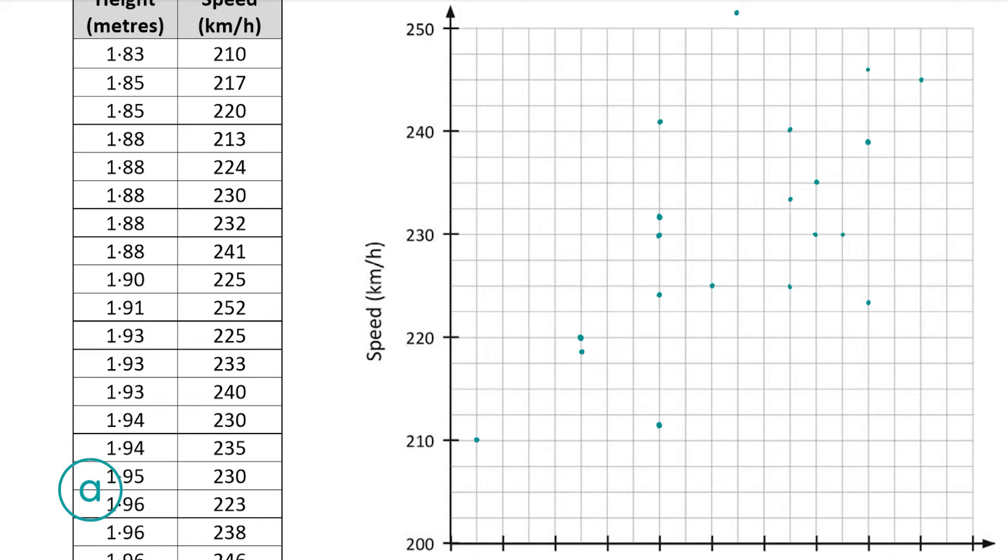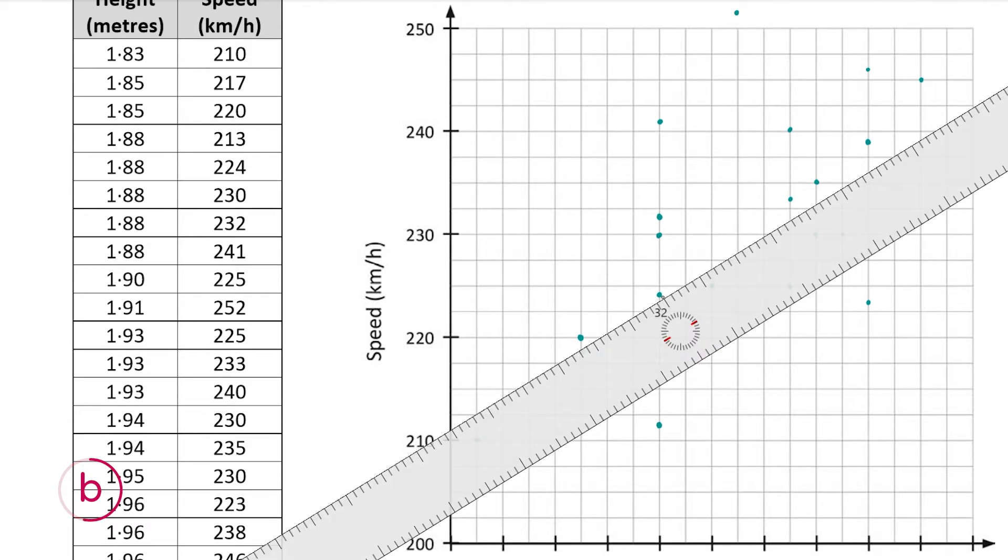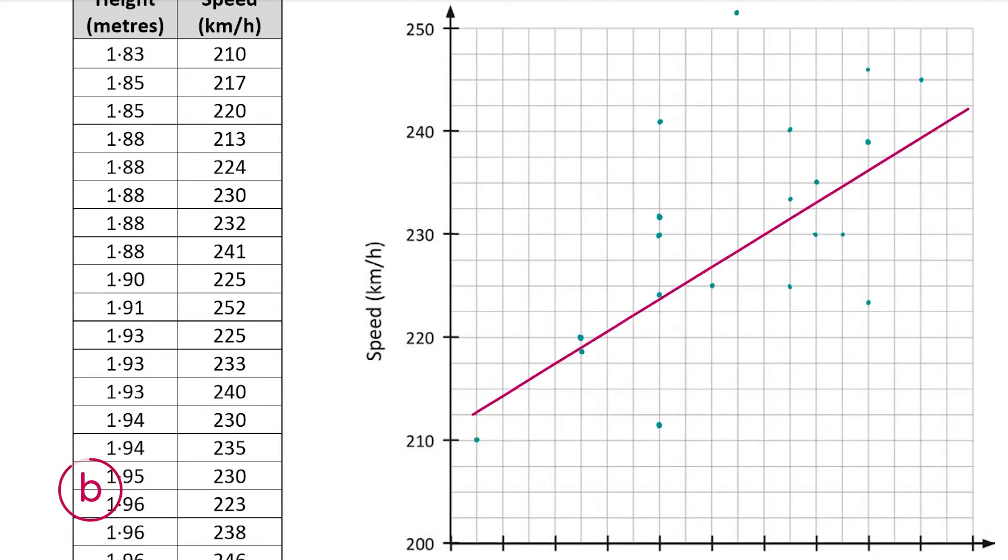So now we have to draw in our line of best fit and as I said it should have roughly 10 points on either side of the line. Now your line of best fit should look something like that pink line there. Not everyone's will look the exact same but it shouldn't be too different to that.